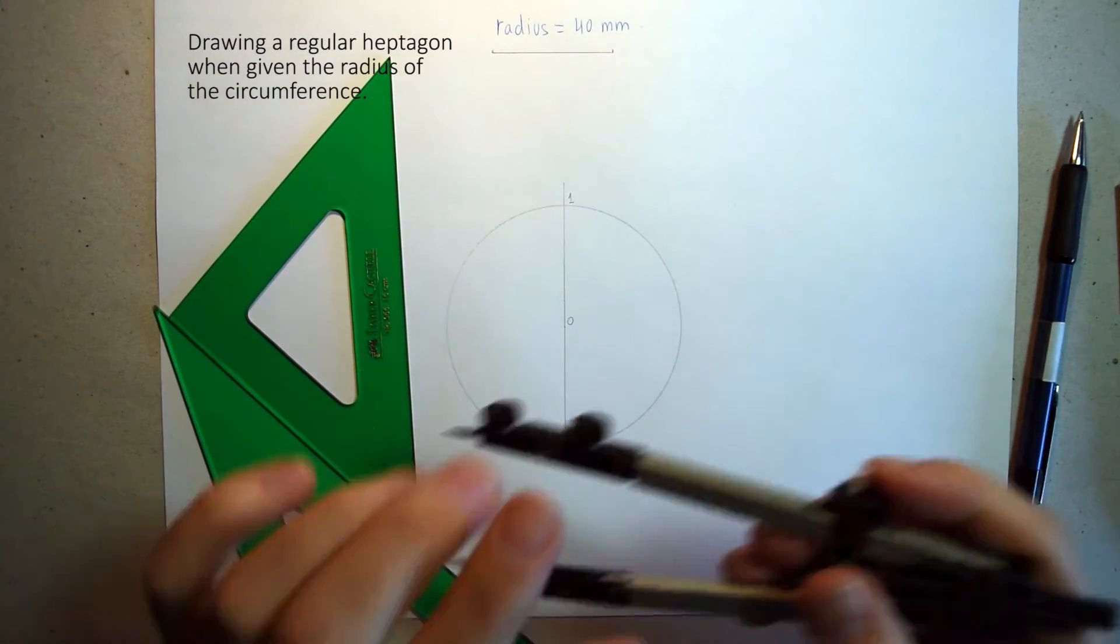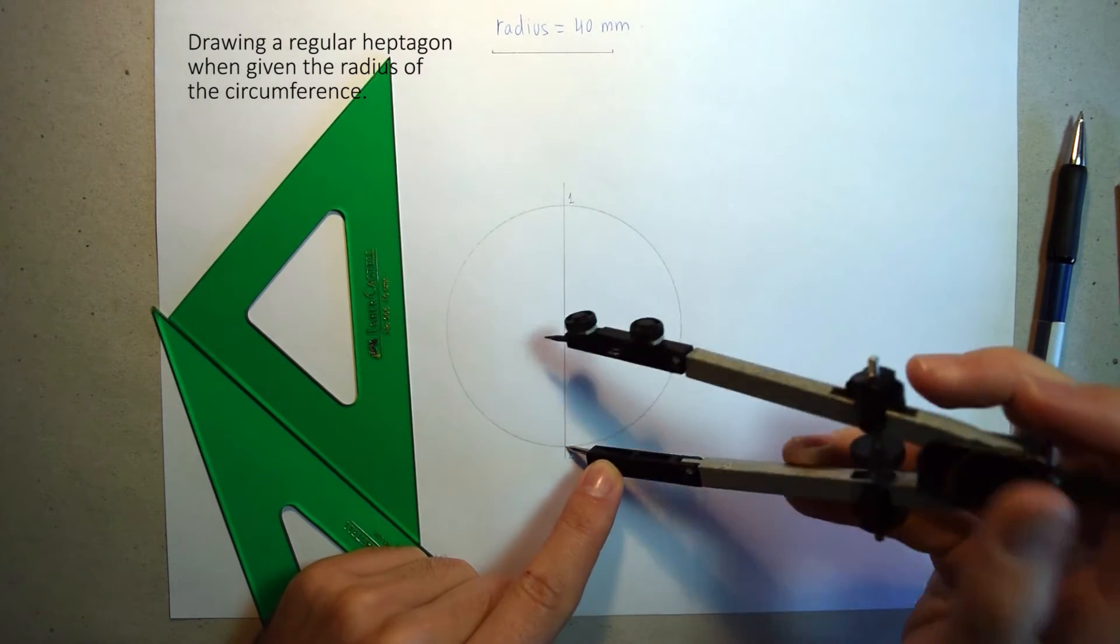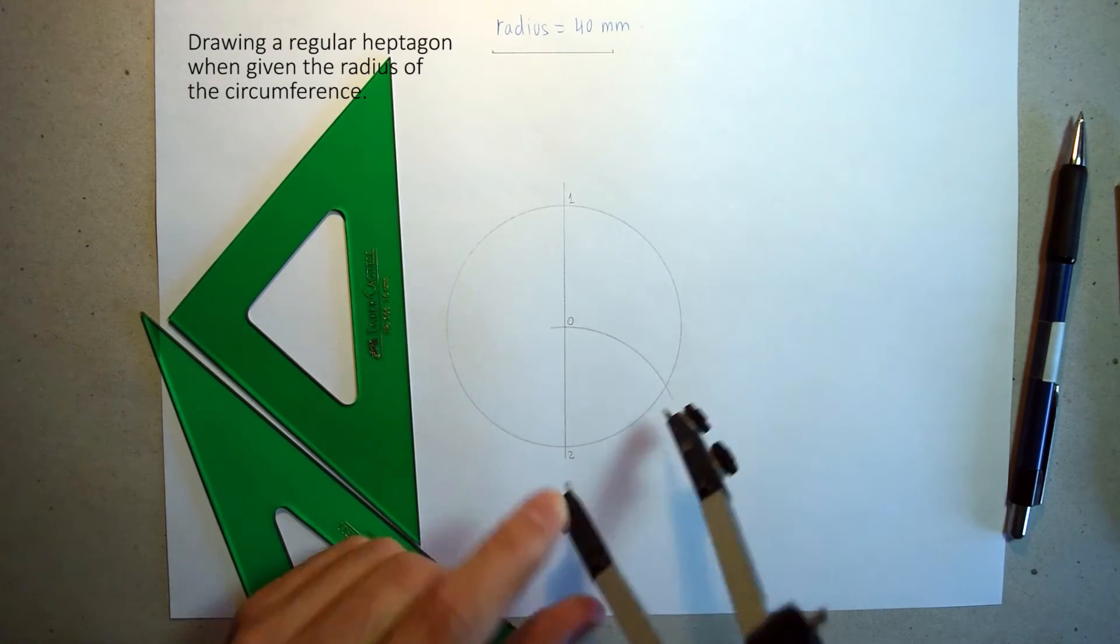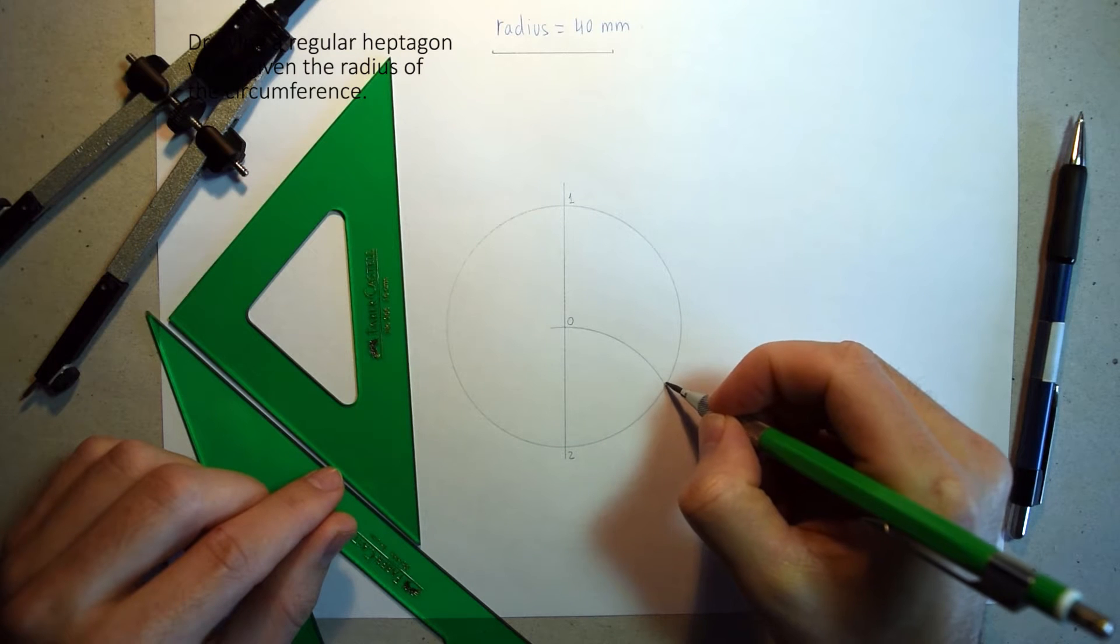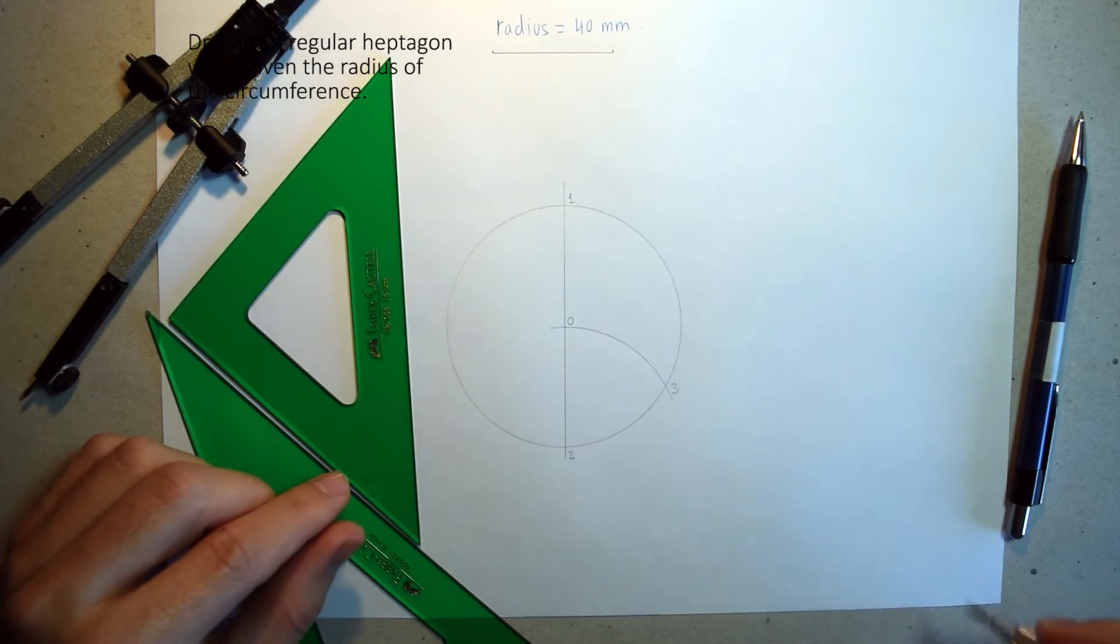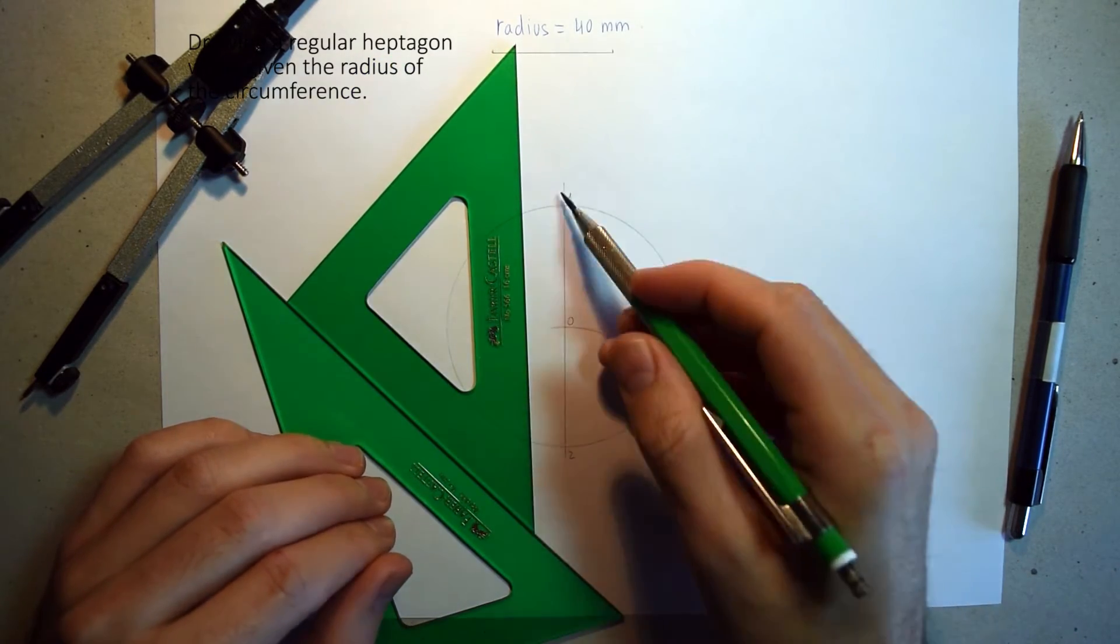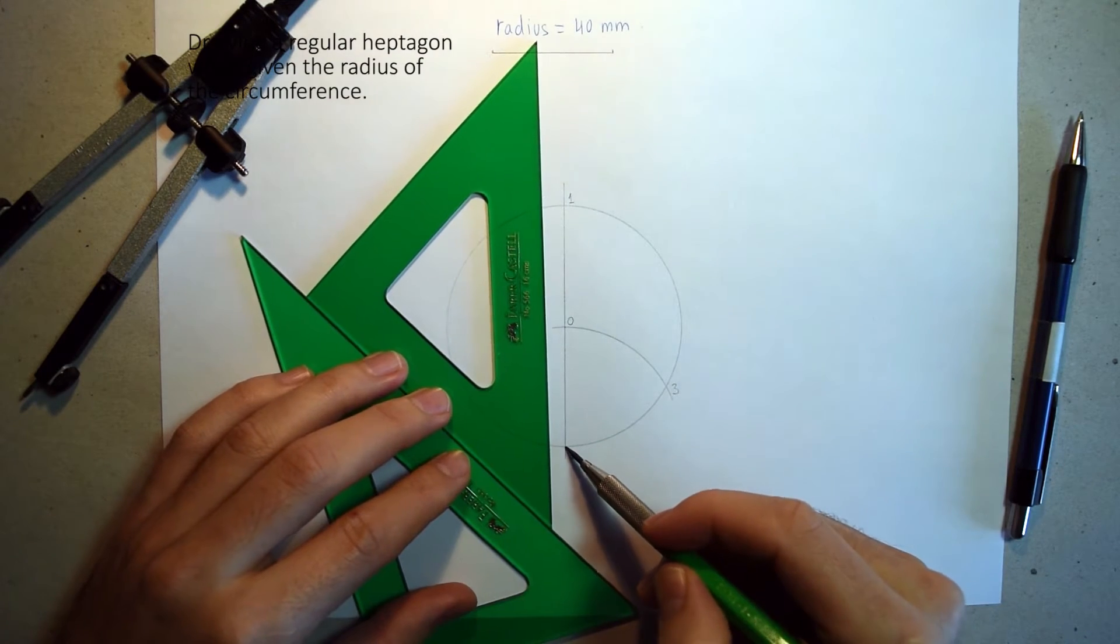We are going to trace an arc with center 2 and radius 2O. This arc gives us point 3. Now we need a perpendicular line to diameter 1-2, and that line must pass through point 3.